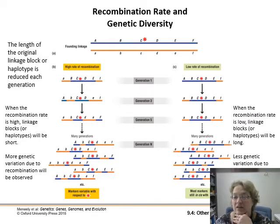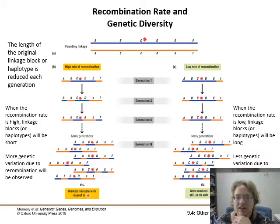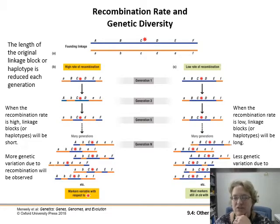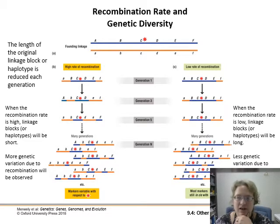So we can look at how big haplotypes are, how big linkage groups are, and bring that back to ask: what's the rate of recombination? And how much time has passed? It's another way of making a kind of genetic clock, by looking at recombination rates along chromosomes.